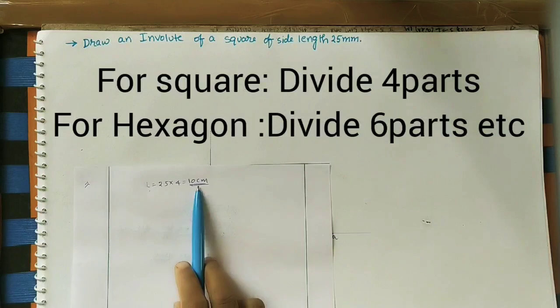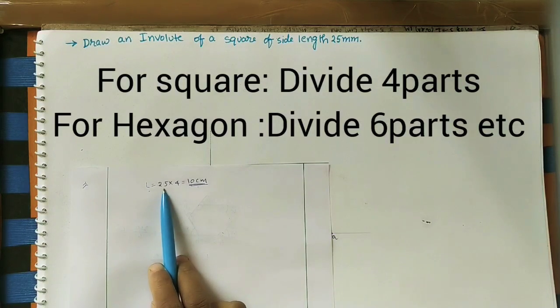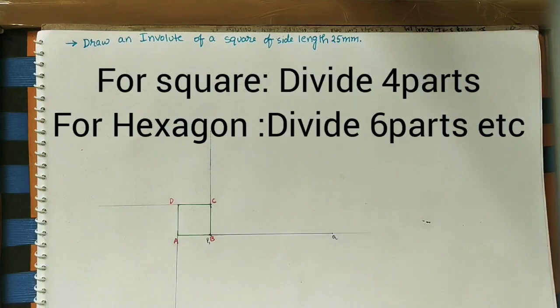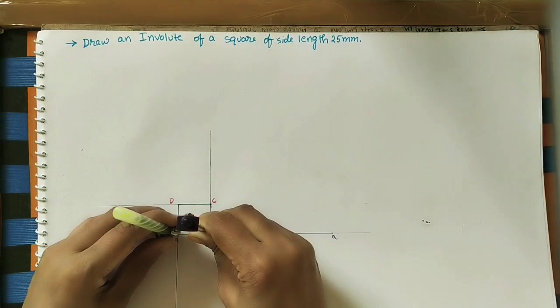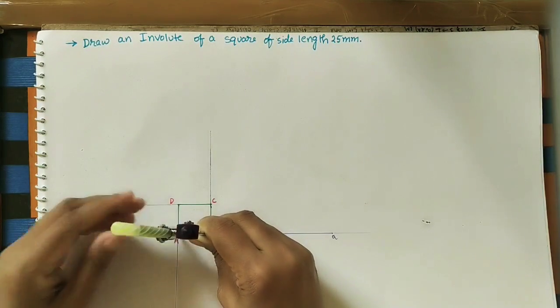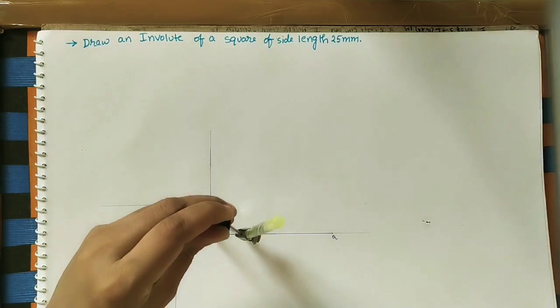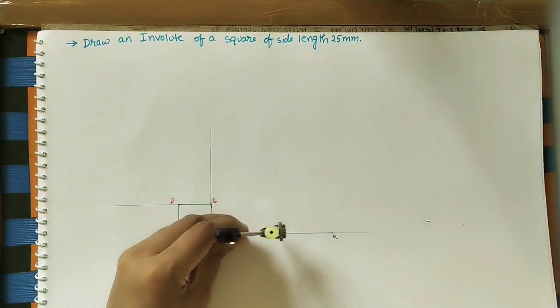PQ is 10 centimeter, we need to divide it into four parts, so each part is 2.5 centimeters. Using a compass, mark the first part and the second one.